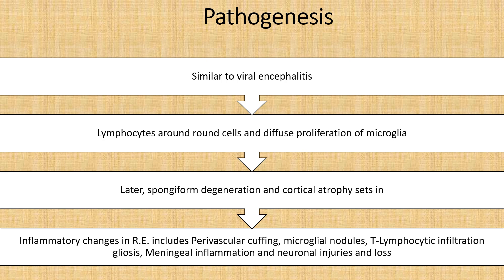In the pathogenesis, it is similar to viral encephalitis, in which lymphocytes, round cell infiltration, and diffuse proliferation of microglia occur. Later on, spongiform degeneration and cortical atrophy occur. Inflammatory changes in Rasmussen's encephalitis include perivascular cuffing, microglial nodules, T-lymphocytic infiltration, gliosis, meningeal inflammation, and neuronal injury.